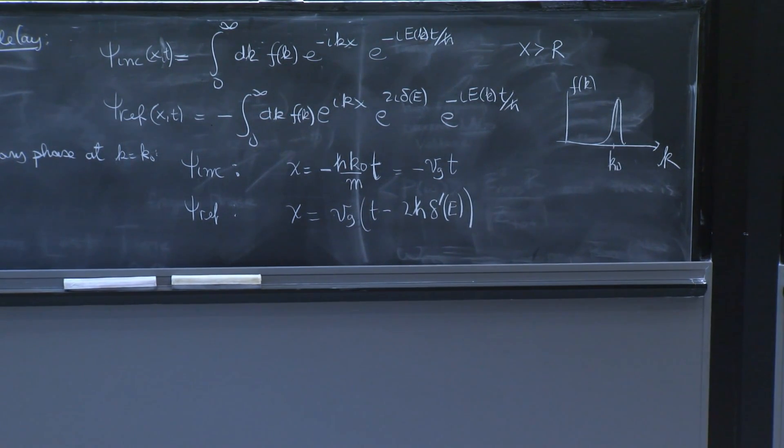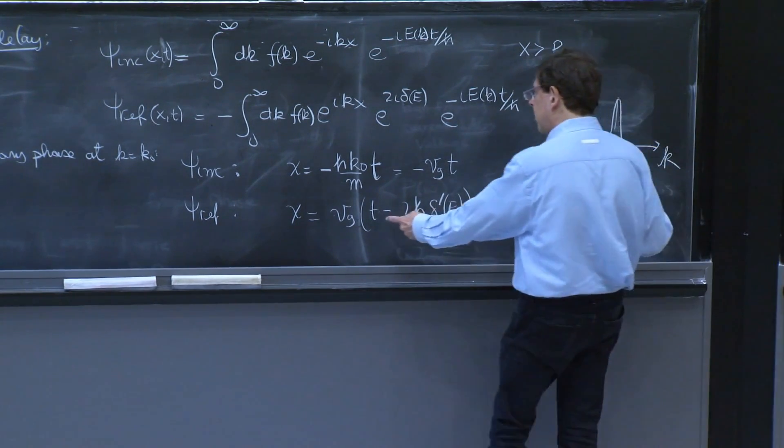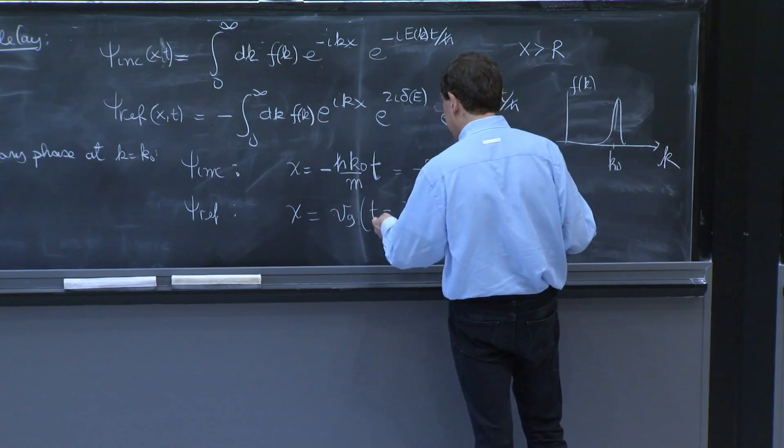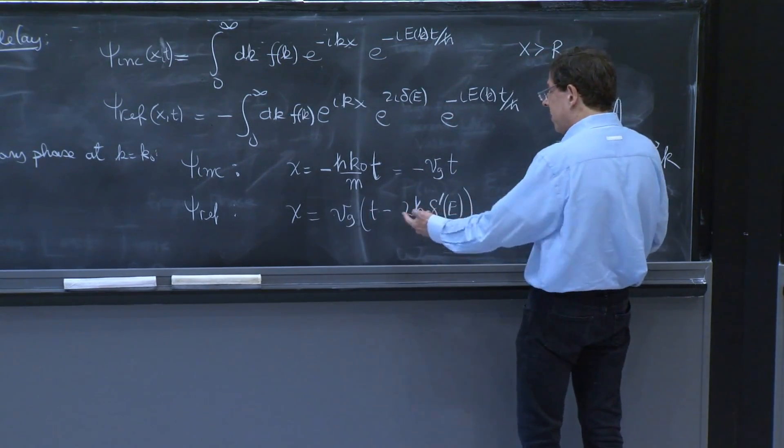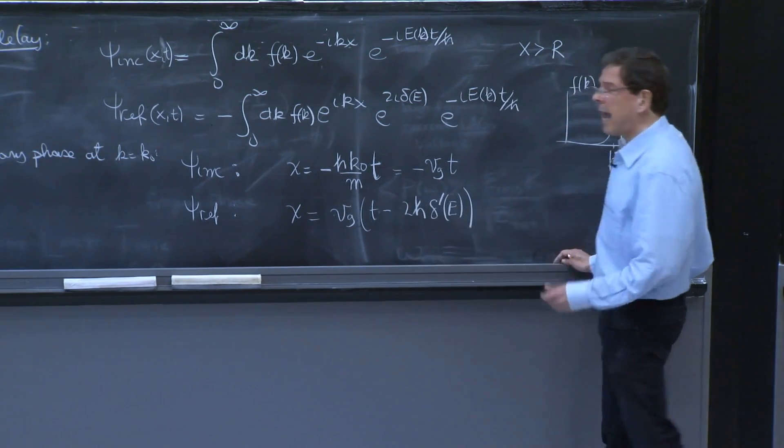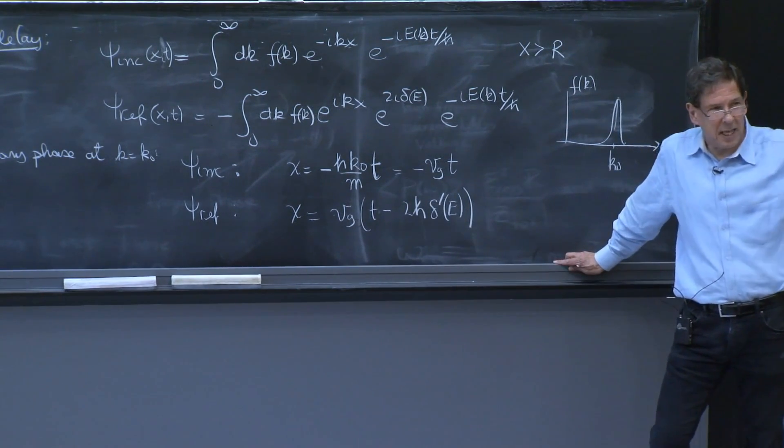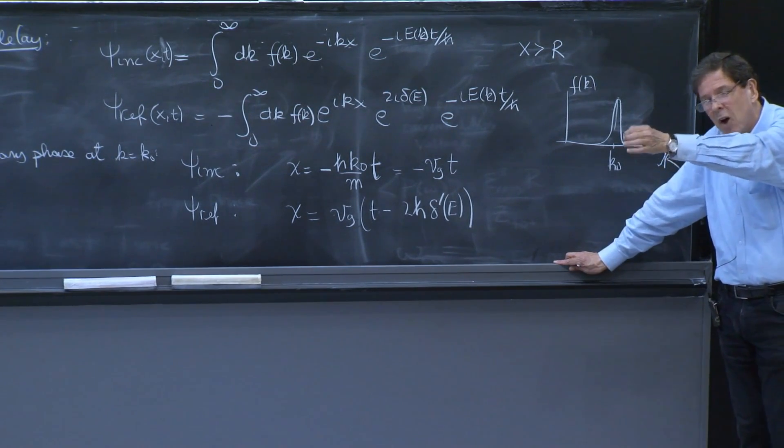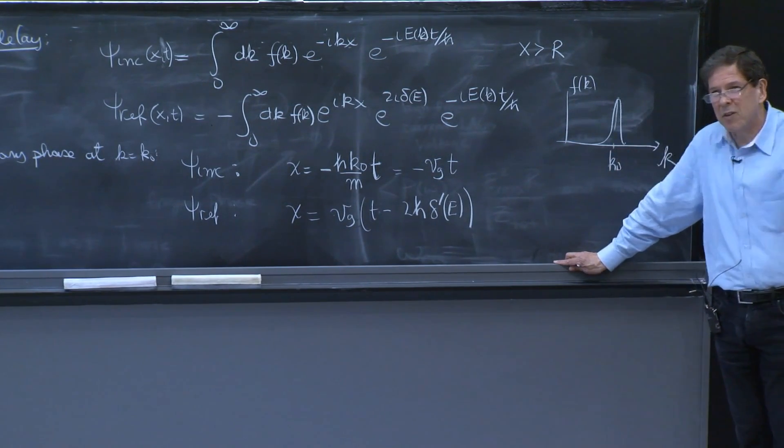So yes, in the reflected wave, x grows as t grows and is positive. t must now be positive. But in fact, this, if you would have just x equal v group t, this would correspond to a particle that seems to start at the origin at time equals 0 and goes out.